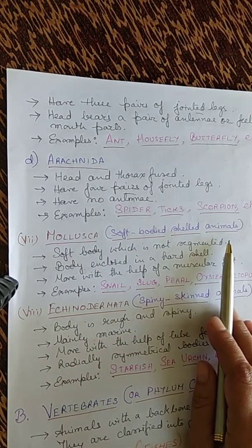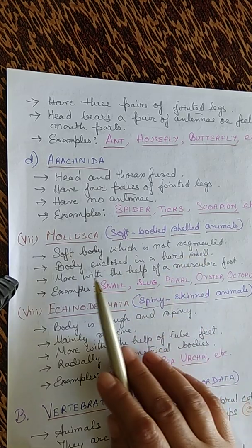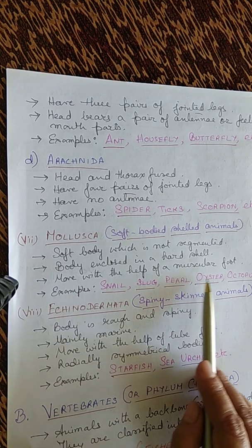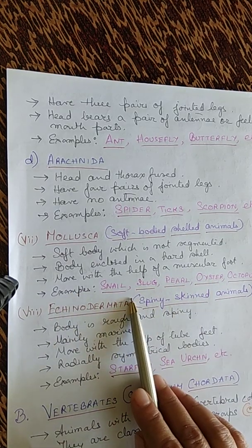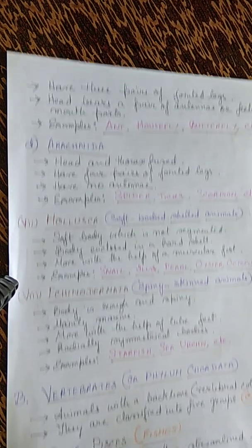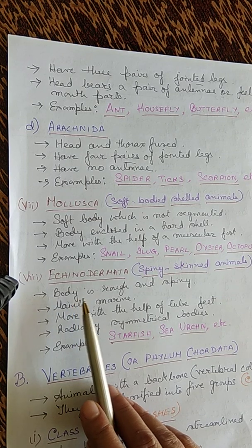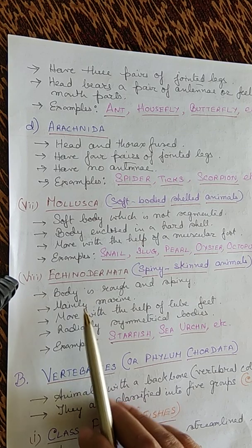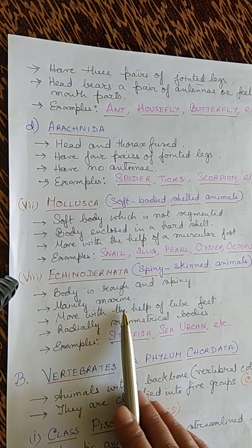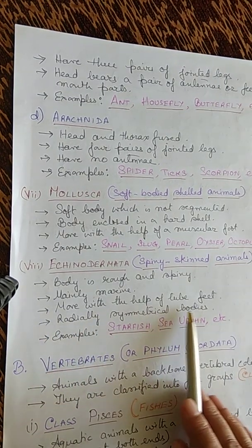The seventh phylum is Mollusca — soft-bodied, shelled animals that are not segmented. Their bodies are enclosed in a hard shell and they move with the help of a muscular foot. Examples: snail, slug, pearl oyster, octopus. The eighth phylum is Echinodermata — spiny-skinned animals with rough and spiny bodies, mainly marine. They move with the help of tube feet and have radially symmetrical bodies. Examples: starfish, sea urchin.